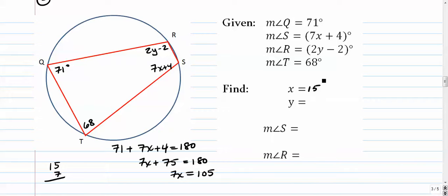So x is 15. If x is 15, we're just going to simply plug it back in there to get the value, the actual measure of angle S. So we're going to put 15 in for x and see what we get.